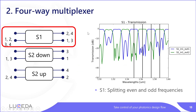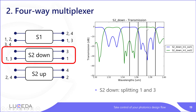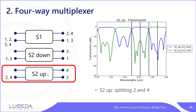Looking at the stages one by one: at output one of stage one, we have wavelengths one and three, and at output two, we have wavelengths two and four — shown on the green curve. Then stage two (down) takes the odd frequencies — wavelengths one and three — and splits them further, so the two wavelengths that were on the same channel at the output of stage one are now split into two separate channels. Similarly, stage two (up) receives the even frequencies — wavelengths two and four — and splits them further into different channels.